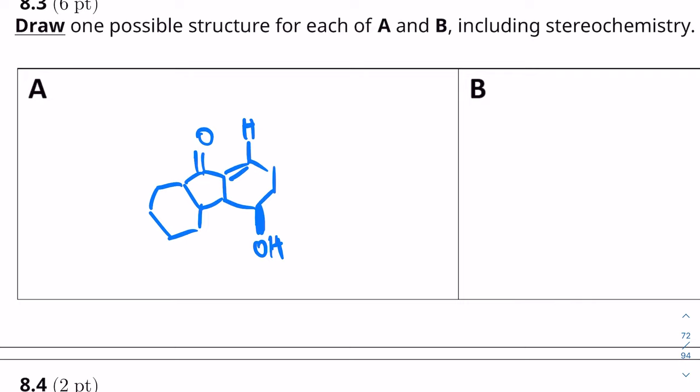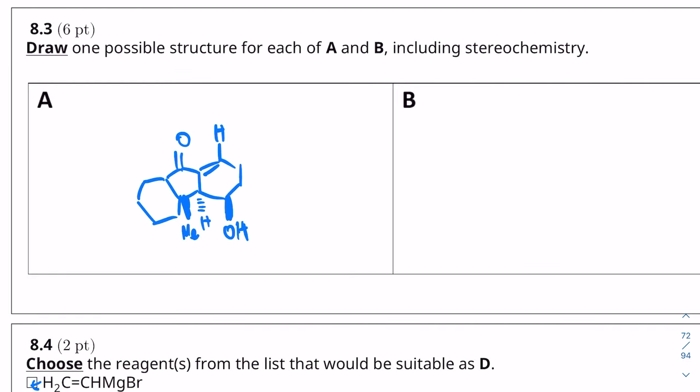And conrotatory gave us the substituents on opposite sides. Now, it doesn't matter which one you draw because the solutions have a bunch of different combinations that you have. All that matters is that the hydrogen and the methyl group are on opposite sides of each other. And in fact, according to the solutions, this is not quite what happens. The real product is going to be when the methyl group is going down and the hydrogen is going up and we have the double bond on the right over here. So that's going to be A.